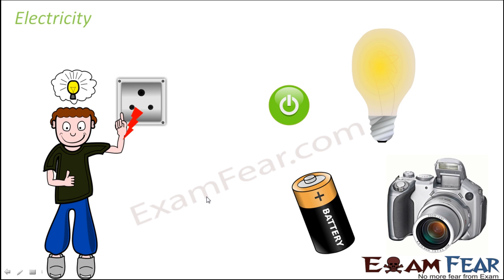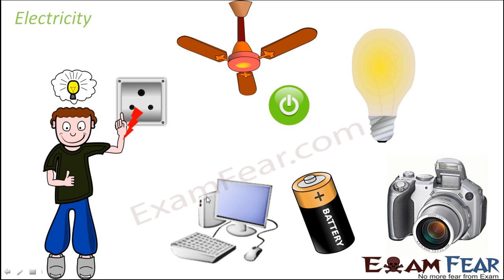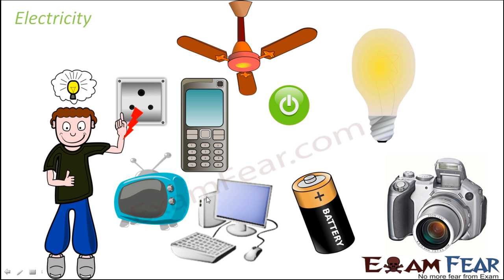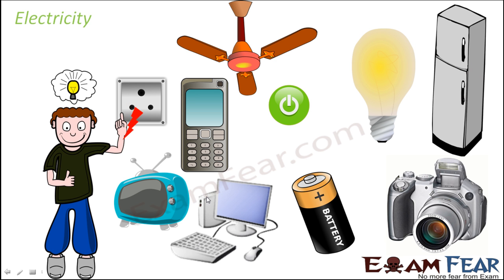Think of your computers, or everyday things at home like the fan — when you switch it on, it moves because of the current flowing through it. Television, transistors, mobile phones — all of them rely on electric current. Think of your refrigerator: when there is a power cut, the refrigerator turns off. Only when there is power does it run, because electric current must flow through its circuit.